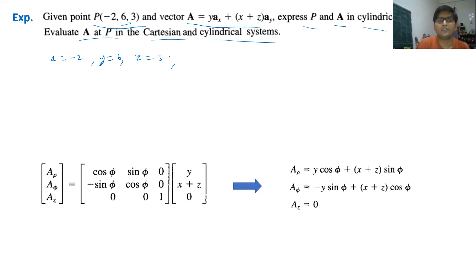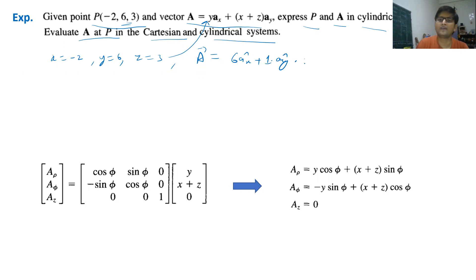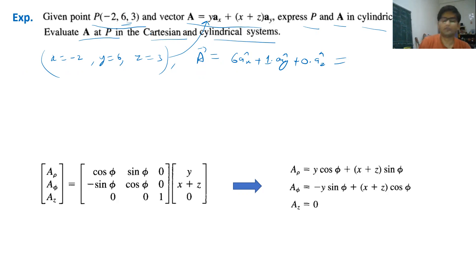We have x = −2, y = 6, z = 3. Substituting into the vector expression: A = 6·a_x + (−2 + 3)·a_y + 0·a_z = 6·a_x + 1·a_y. So the vector at point P in Cartesian form is A = 6·a_x + a_y.